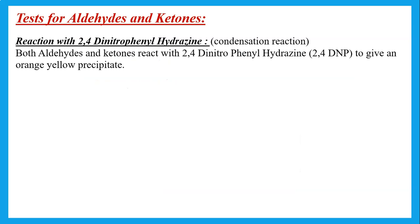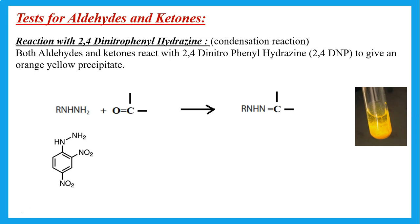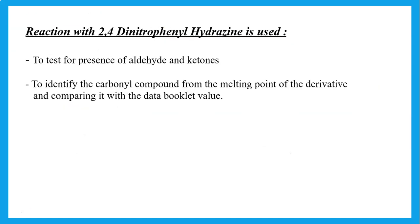To test for aldehydes and ketones: both react with 2,4-dinitrophenylhydrazine (2,4-DNPH) to give an orange-yellow precipitate. 2,4-DNPH can be represented as R-NH-NH₂. When it reacts with an aldehyde or ketone, the precipitate formed is unique for each compound. This reaction is used to test for aldehydes and ketones and can identify which aldehyde or ketone by measuring the melting point of the purified precipitate and comparing with data book values.